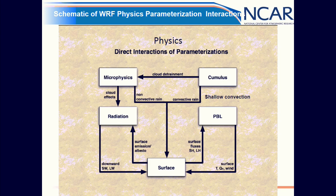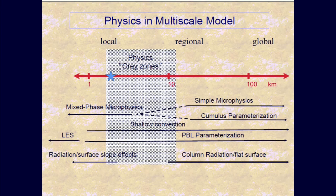There are a variety of parameterizations included in any mesoscale model: microphysics, cumulus, planetary boundary layer, radiation, and surface. Climate models operate at global scales — that's what you hear about for CMIP5 — then you get CORDEX-type regional simulations typically around 25 to 50 kilometers. At these scales you need a cumulus parameterization; you have to do something with the moisture in the boundary layer and account for energy and momentum transports.